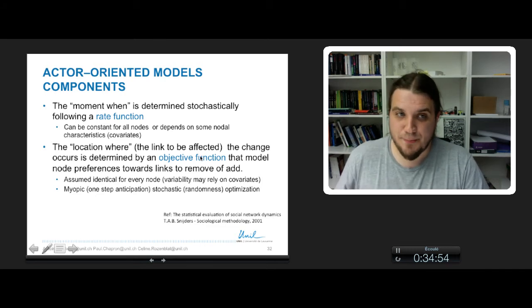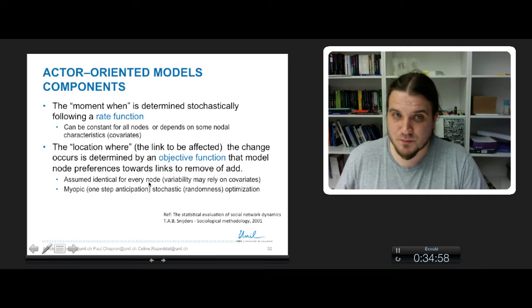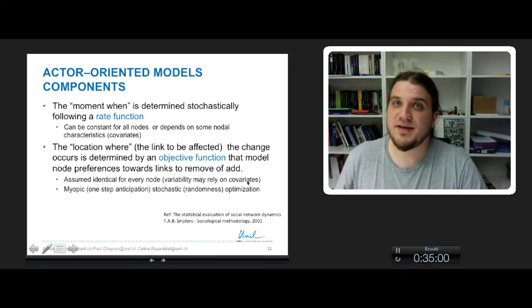This objective function is assumed identical for every node, but we can use covariates to make the objective function different from one node to another.